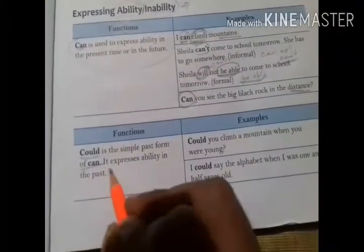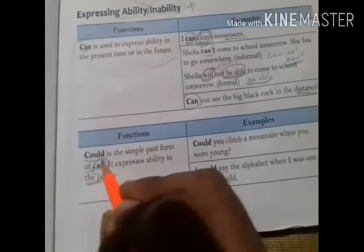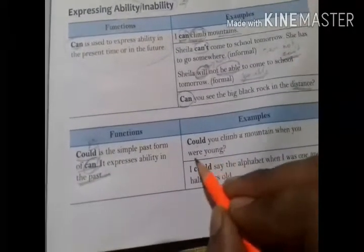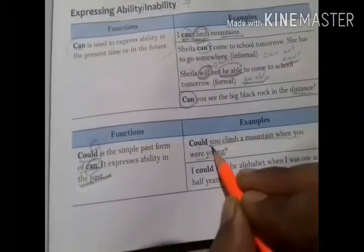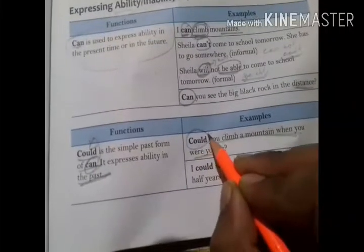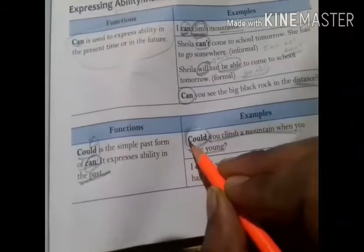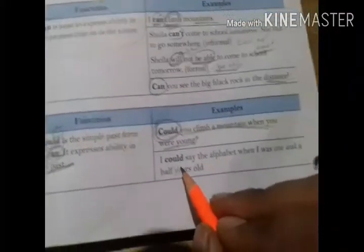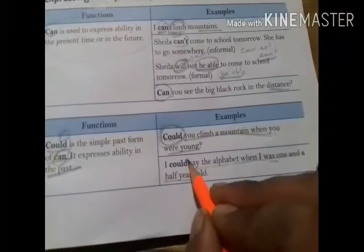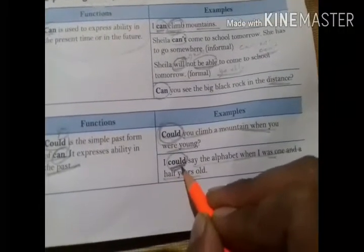Could is the simple past form of can. It expresses ability in the past. If something we were able to do in the past, we use could instead of can. For example: 'Could you climb a mountain when you were young?' That refers to the past moment. Another example: 'I could say the alphabet when I was one and a half years old.' Here, the modal auxiliary could expresses past ability as the past tense of can.